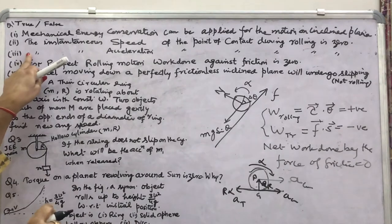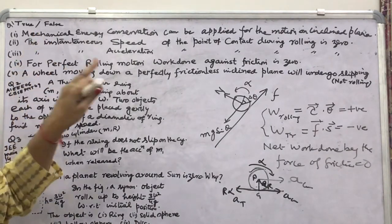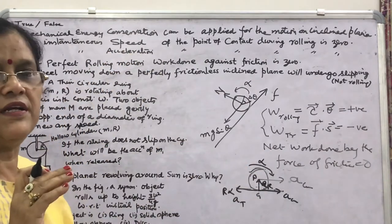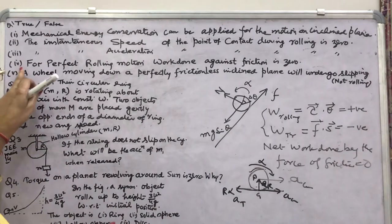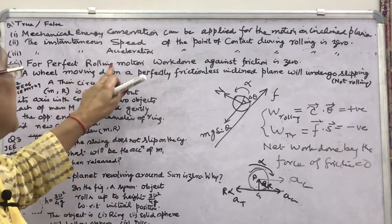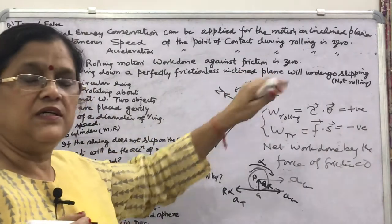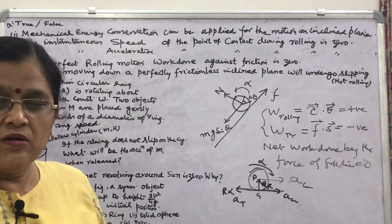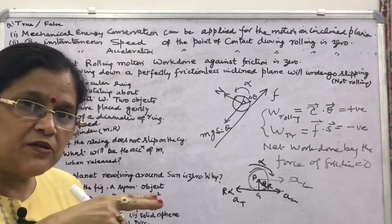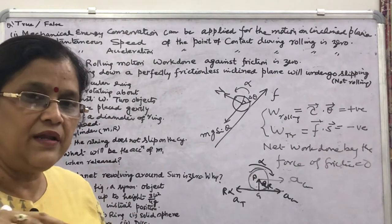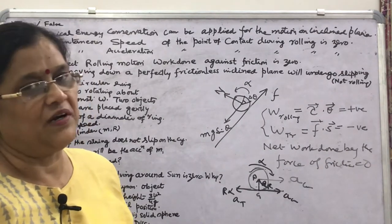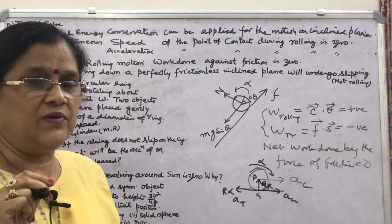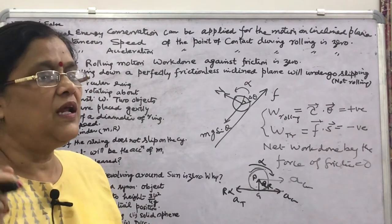The tangential acceleration components — ACM and R·α — may be equal and opposite, so net tangential acceleration is zero, but not the total acceleration, because radial acceleration AR toward the center still exists. So the answer is FALSE: the instantaneous acceleration is AR toward the center, not zero. Fourth part: for perfect rolling motion, work done against friction is zero. Perfect rolling means friction is zero, therefore work done by friction is also zero. TRUE.